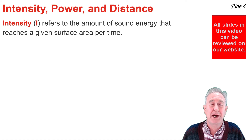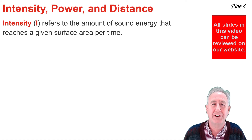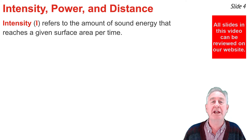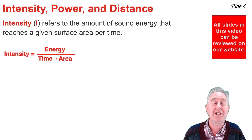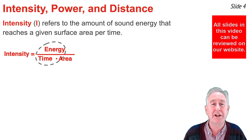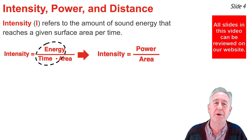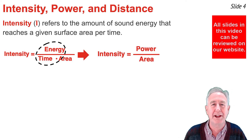The intensity of a sound wave refers to the amount of sound energy that reaches a given surface area per unit of time. From this definition, we can write the equation for intensity as: intensity equals energy divided by time, divided by area. In physics, the ratio of energy per time is called power, so I can rewrite this equation as intensity equals power divided by area.